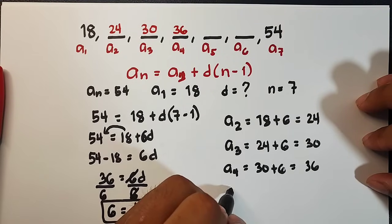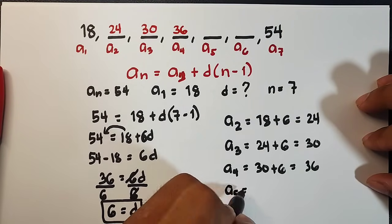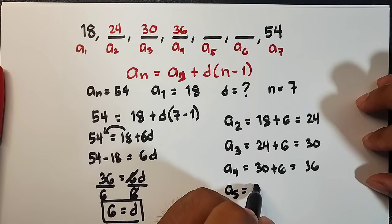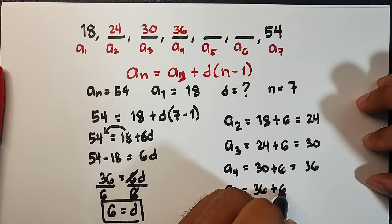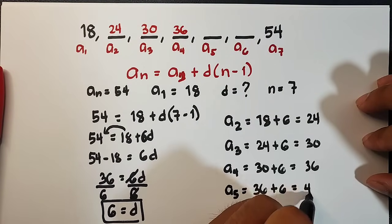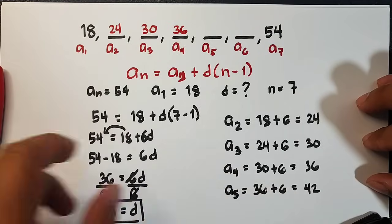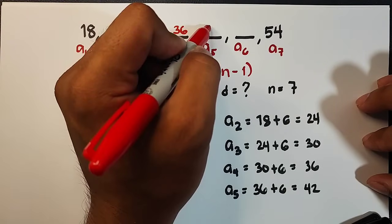Next, for the a sub 5, 36 plus 6. And that is 42. That will be the fifth term of the given sequence.